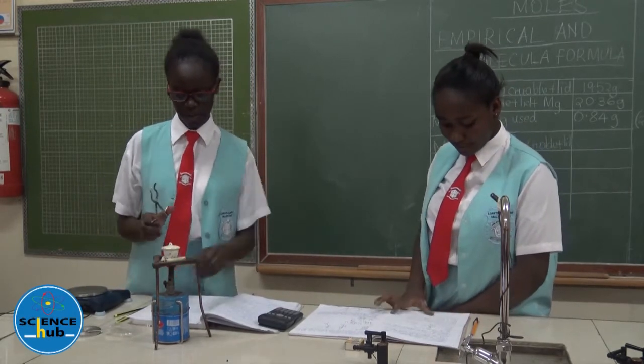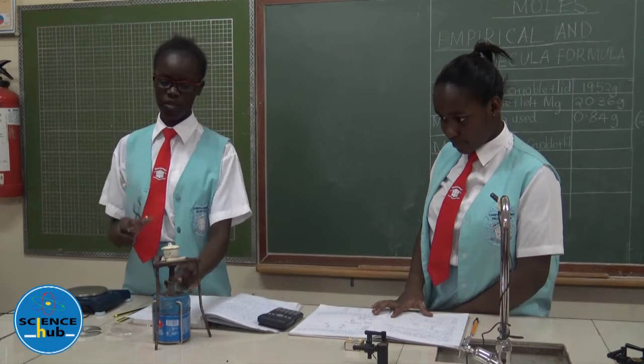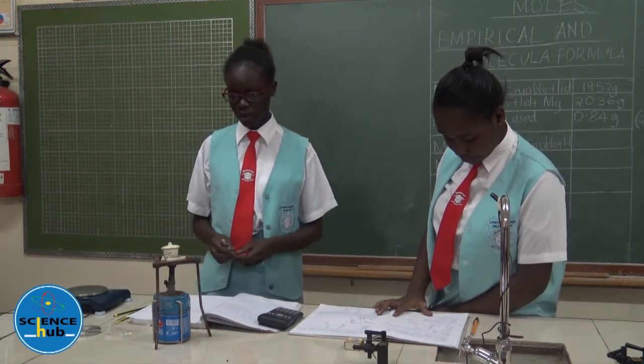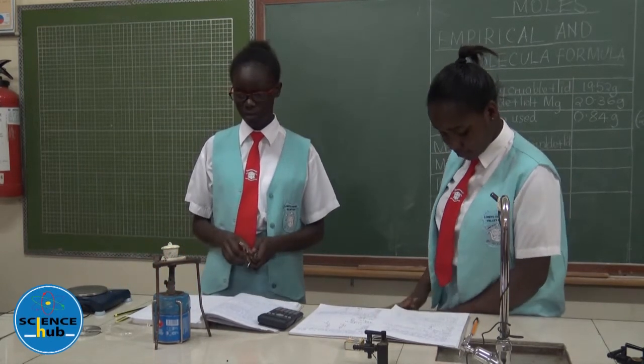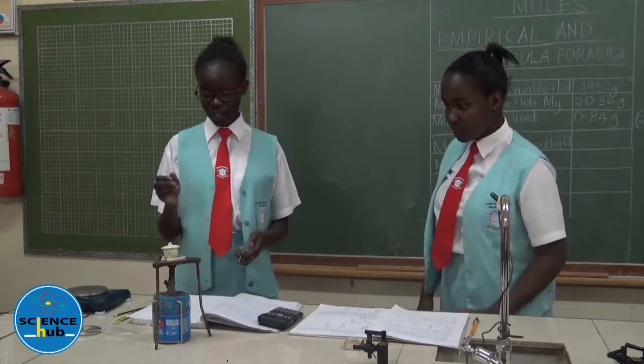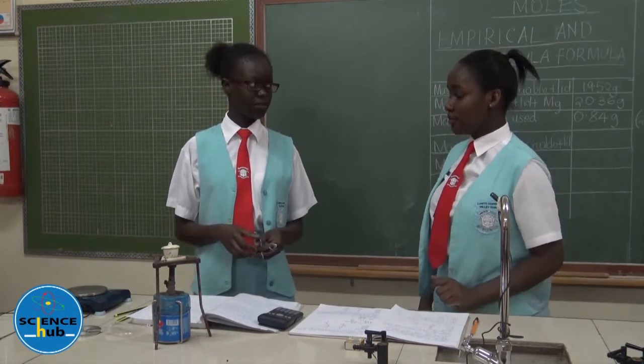Now we may close the bunsen burner and allow the crucible to cool so that we may get the mass of the magnesium oxide which has been formed inside the crucible, along with the crucible and the lid after heating.